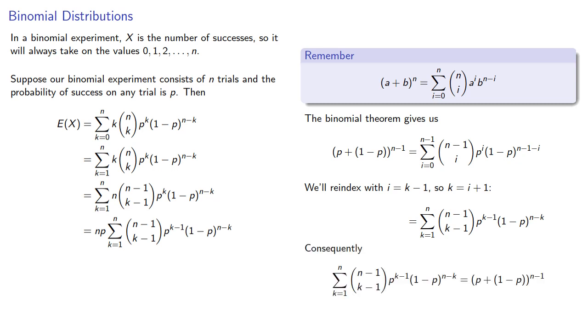And so consequently our summation is the n minus first power of p plus 1 minus p. But that's just the n minus first power of 1, which is going to be 1. And so the expected value of our binomial experiment is going to be n times p.